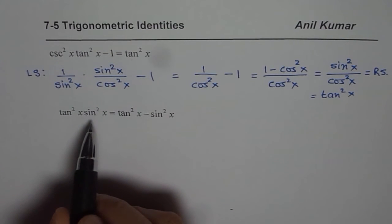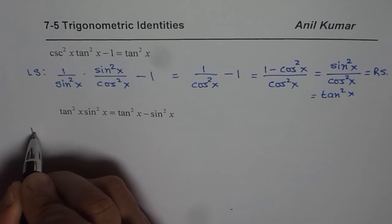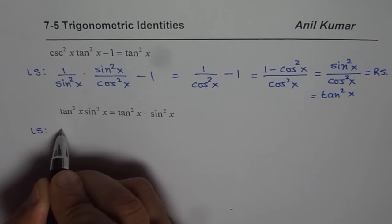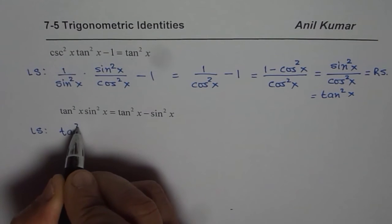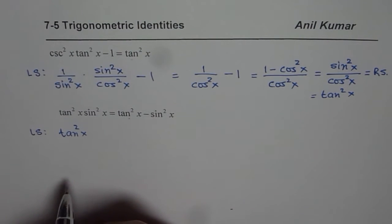What we can do is we can write sin square x as 1 minus cos square x and then simplify. So we will again begin with left side and we have here tan square x. We are maintaining tan square x in this case since we need it on the right side. That is the whole idea.